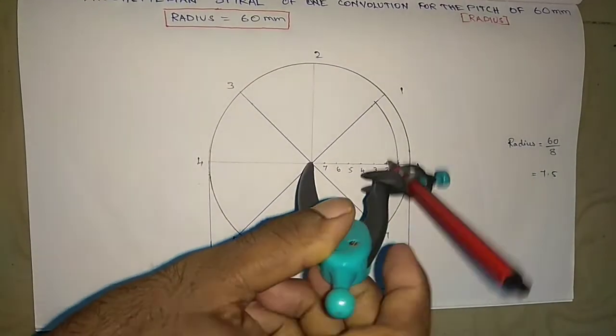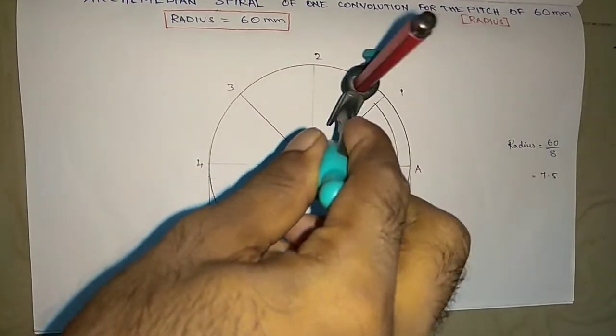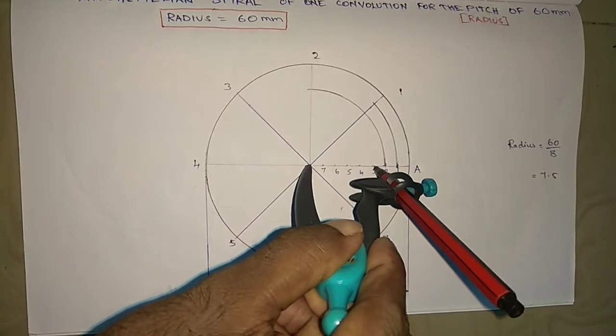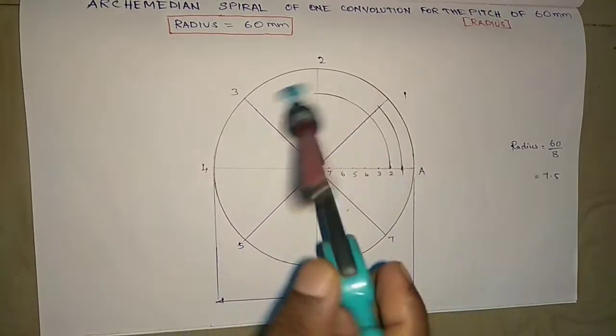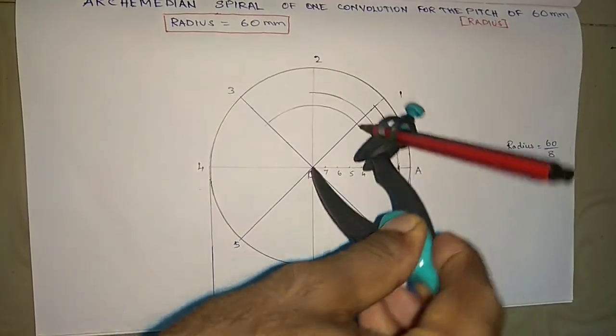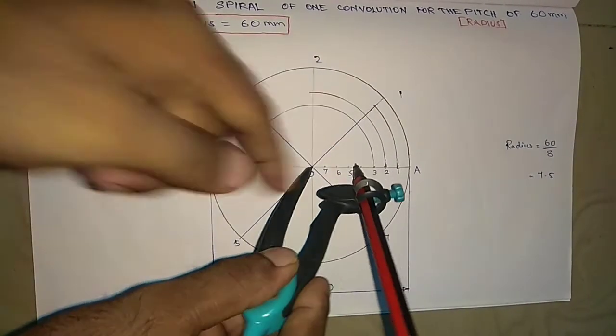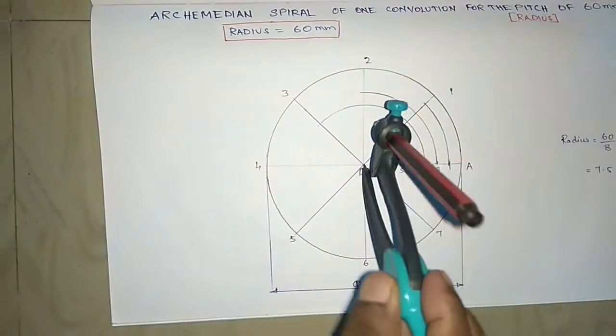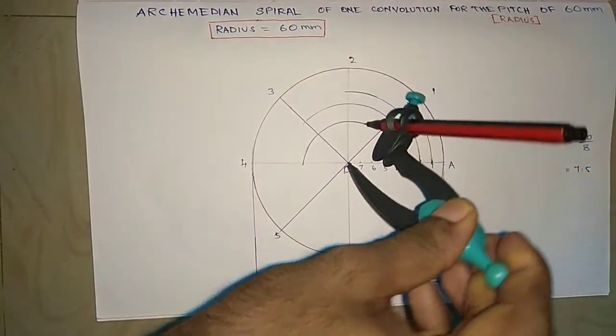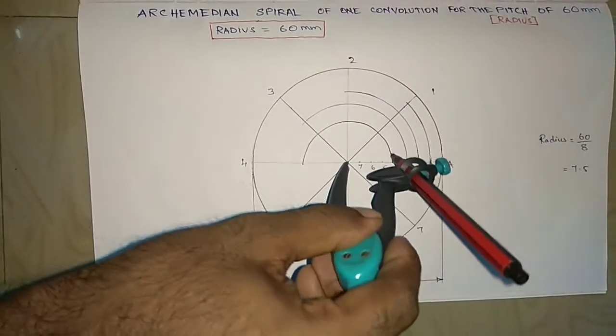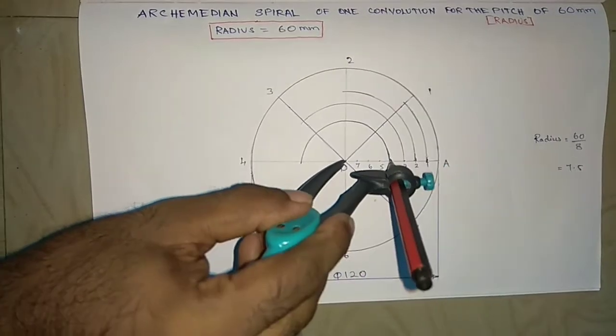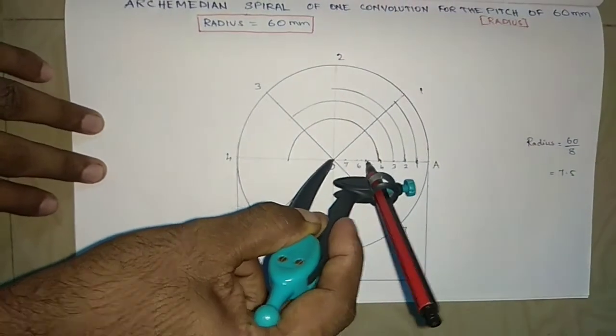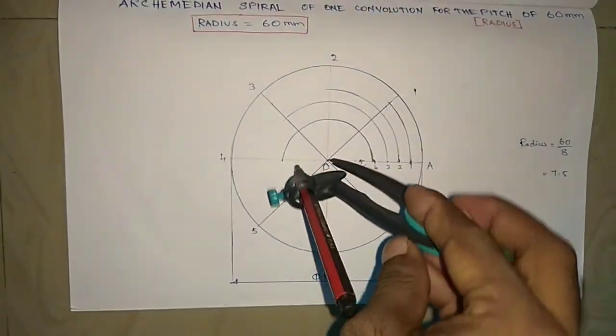Similarly center to second point, draw an arc up to the second line. Then third, draw an arc up to the third. Then measure the radius for fourth point, draw an arc up to the fourth line. Then center to the fifth point, draw an arc up to the fifth line.